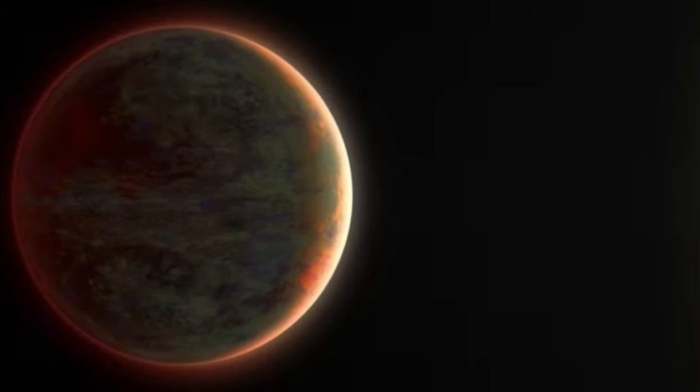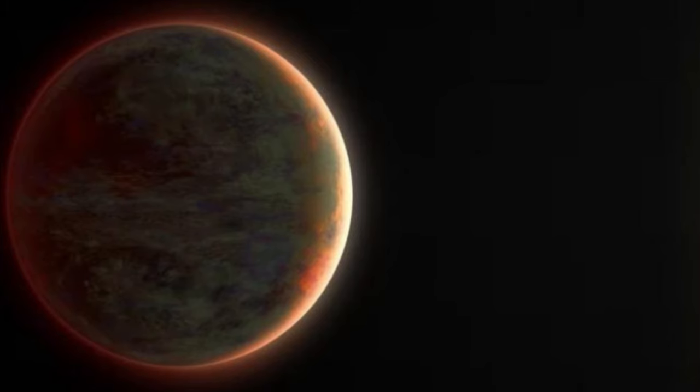A giant exoplanet 855 light-years away is so extreme, it has clouds of vaporized metals and rains liquid rubies and sapphires.